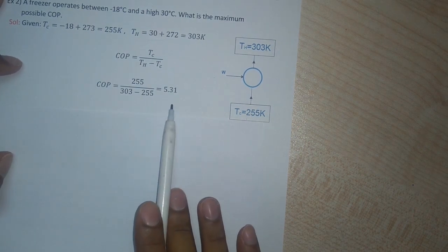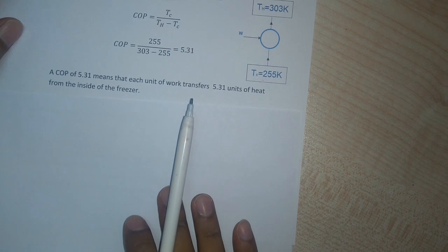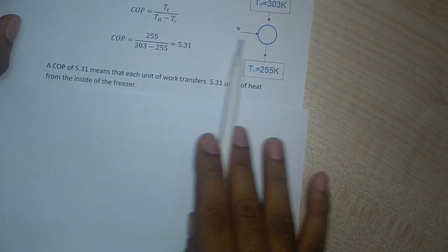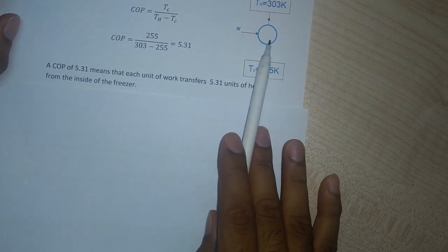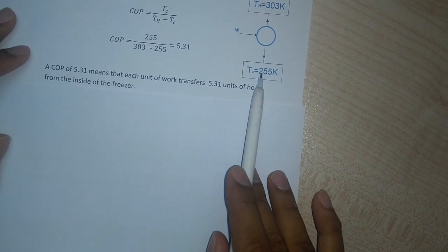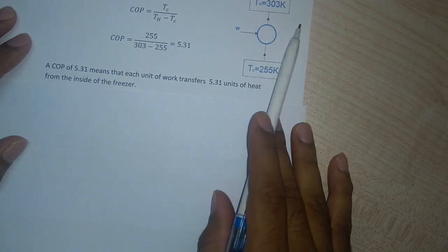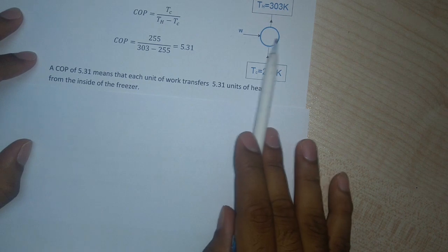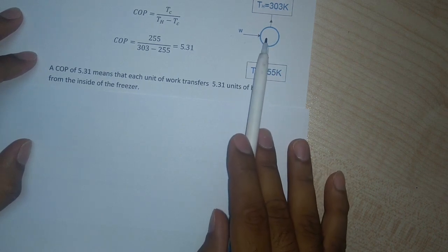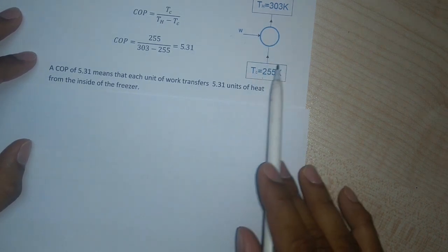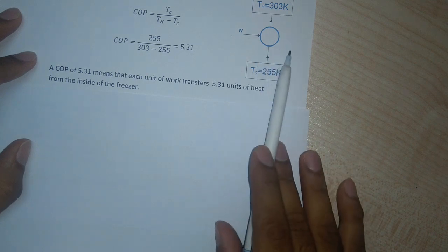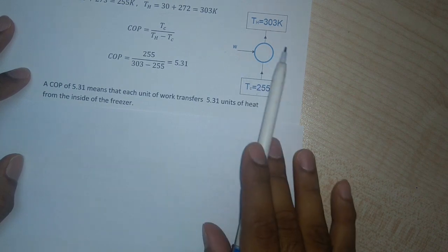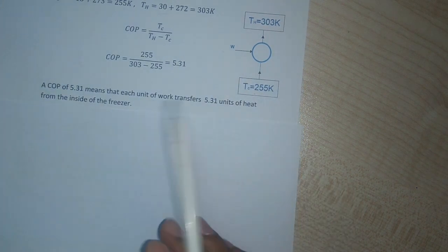What does a COP of 5.31 mean? A COP of 5.31 means that each unit of work input transfers 5.31 units of heat from inside the freezer. In other words, if I give 1 joule of work as input, 5.31 joules of heat will be removed from the freezer. That is what a refrigerator does — you give in some input and remove heat from the object placed in the freezer.